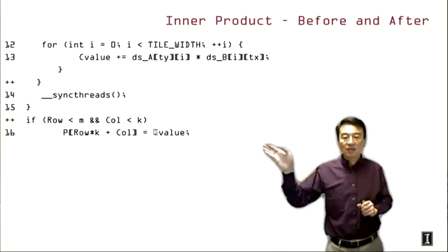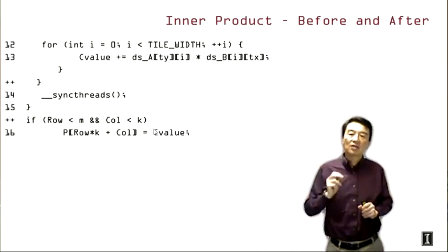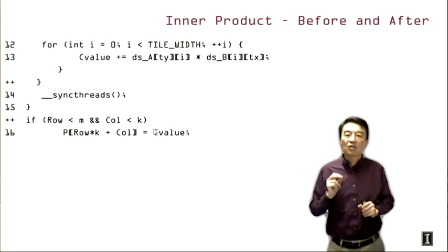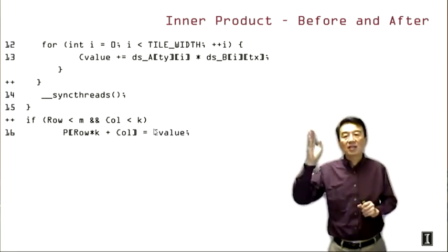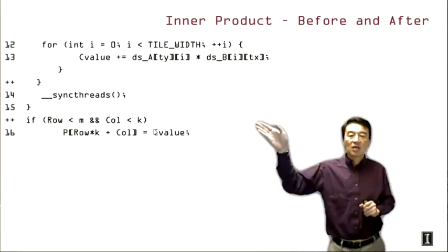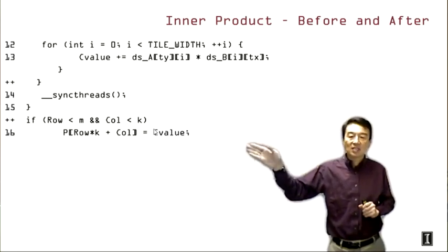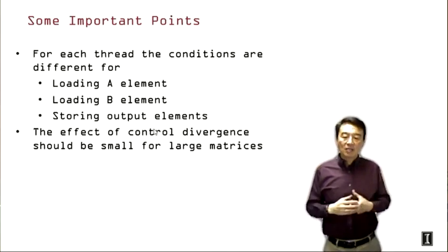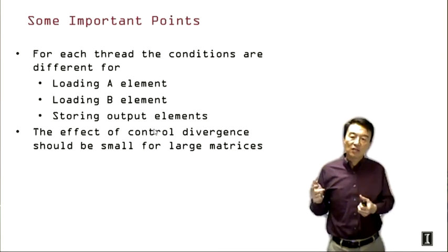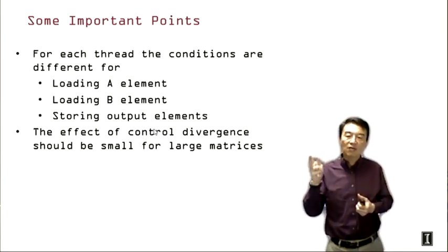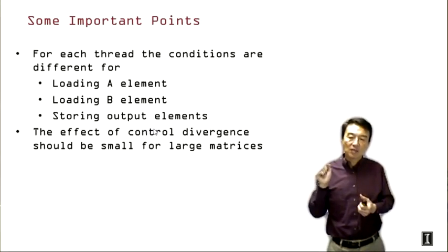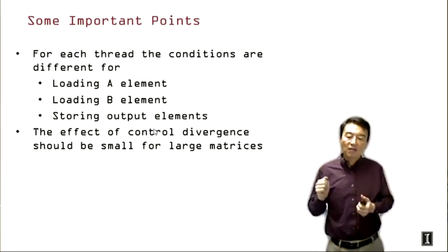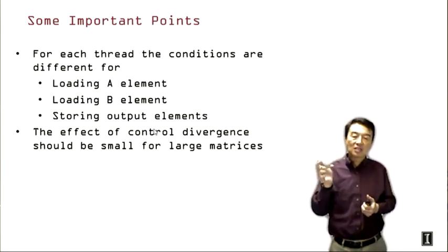When we come out of the tile loop, we know we're done with all the C elements. Here we need to test whether the row index and column index are within the valid y-dimension and x-dimension. As long as they're both within the valid range, we can go ahead and write the C element — note there is a typo in the slides where it says P instead of C. Some important points: for each thread, the conditions are different for loading an A element, for loading a B element, and for storing C elements. You need to check each condition and make sure you have implemented each condition correctly. The effect of control divergence should be very small, as analyzed in the index-checking slides.